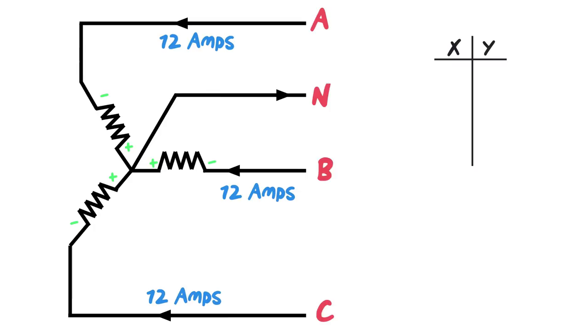Again, as always, we put up our XY chart over on this side because we need to take these guys. These currents are going to be coming in at different vectors, which means we can't add them up arithmetically. We can't just add 12 amps to 12 amps.